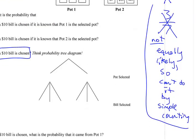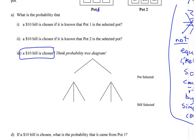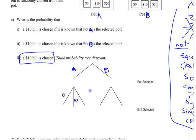So once we're okay with that, we're going to analyze the situation. I'm going to call these pots A and B — using letters makes it easier to distinguish from the dollar amounts. In pot A you could get a $1 bill, a $10 bill, or a $20 bill. In pot B you could get a $1 bill, a $10 bill, or a $20 bill. Write down the probabilities next to each of those branches.